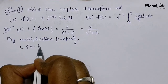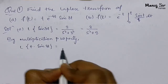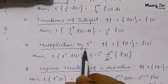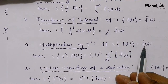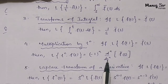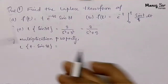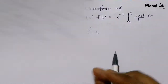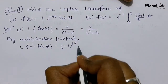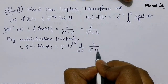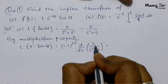Now by the multiplication property, we find L{t·sin 3t}. The multiplication property states: if L{f(t)} = F̄(s), then L{tⁿ·f(t)} = (−1)ⁿ · dⁿF̄(s)/dsⁿ. Here n = 1, so it becomes (−1)¹ · d/ds [3 / (s² + 9)].